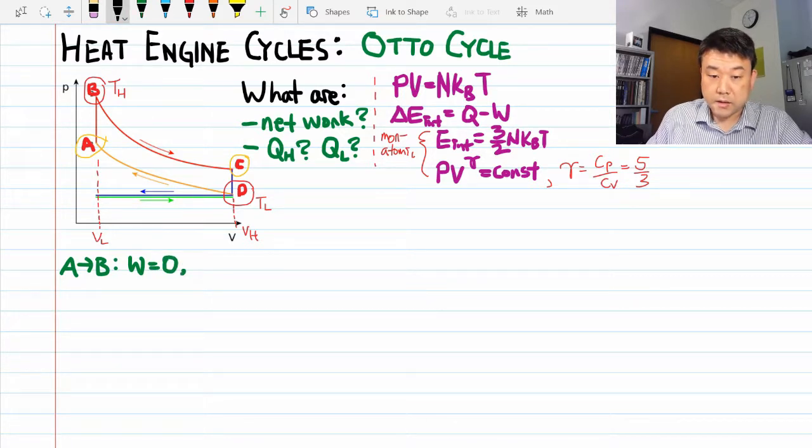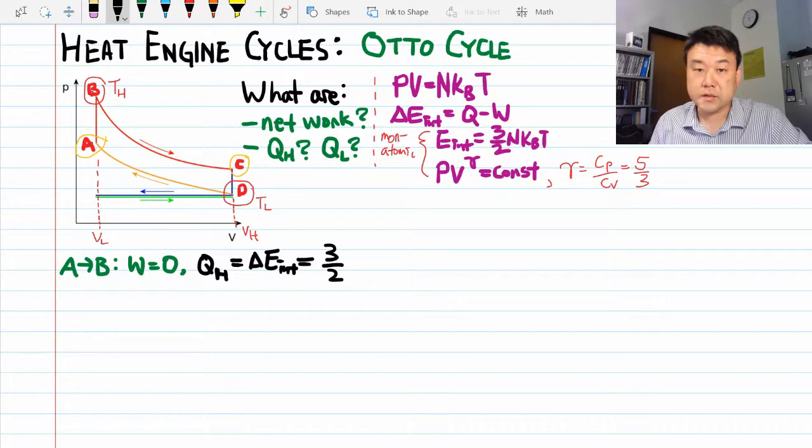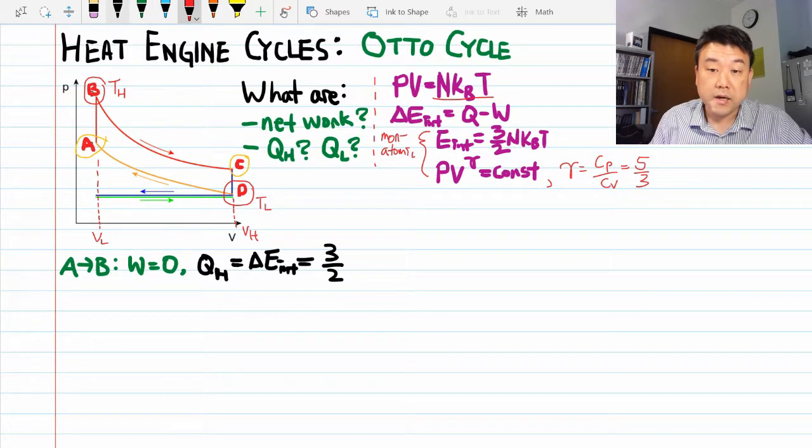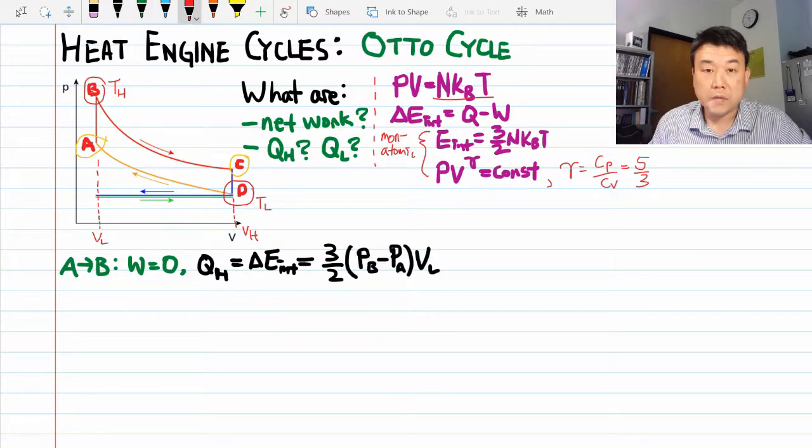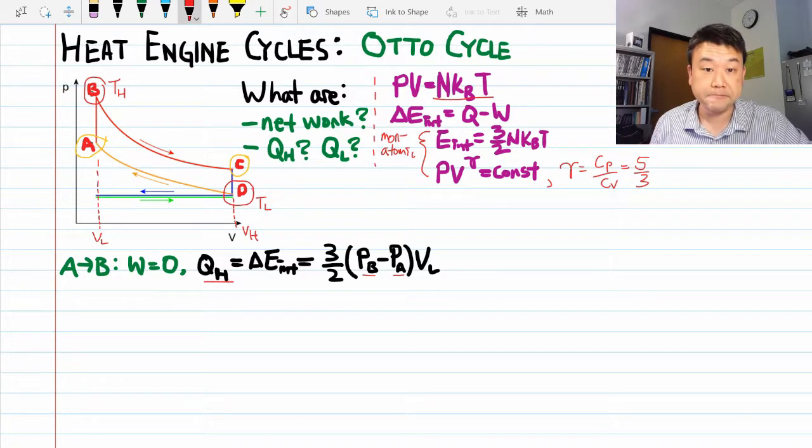So from A to B. This is isochoric heating. We've done this before. No work is done. And the heat input is equal to a change of the internal energy. I can write this in terms of the difference in temperature. But using ideal gas law, I'm going to rewrite it in terms of pressure and volume. And later on, we'll eliminate these additional unknowns we just introduced. And one more thing. I'm labeling this as QH because that's the only place where there's a heat input to the system.